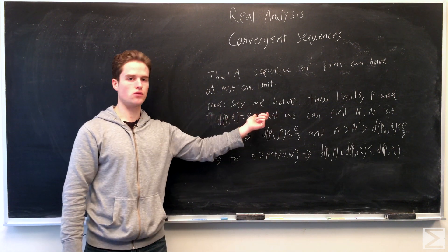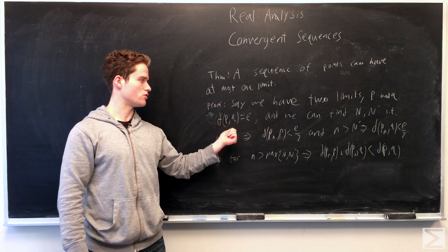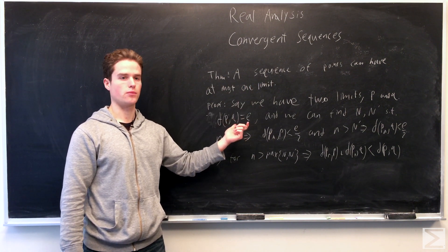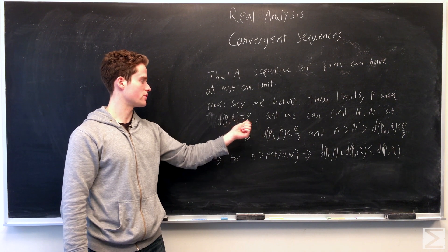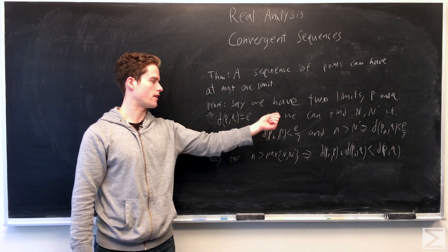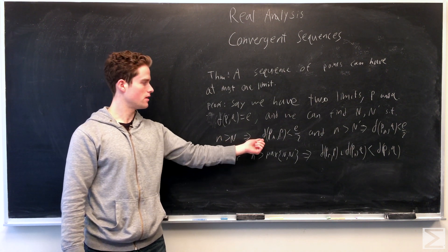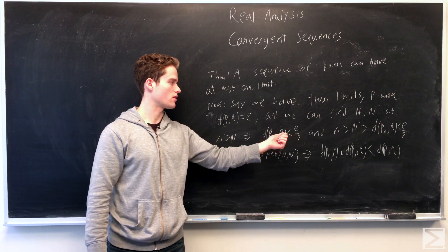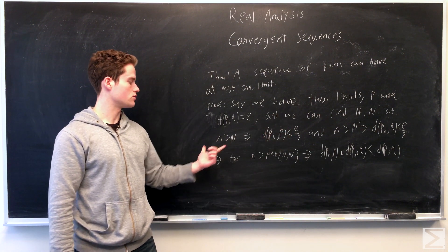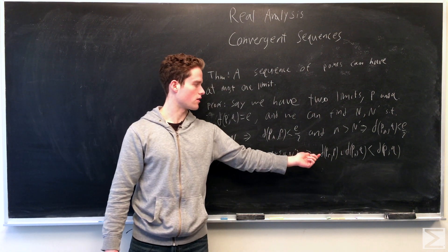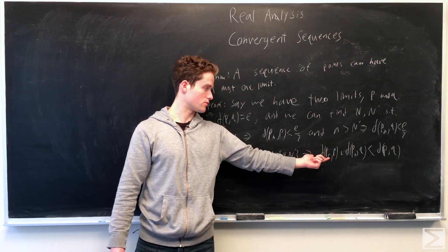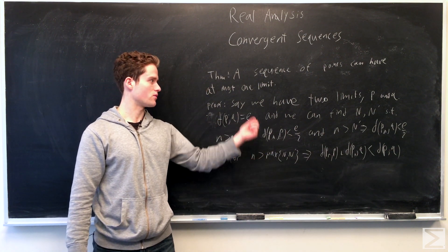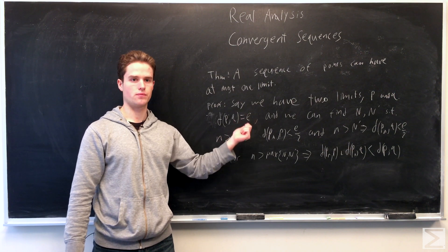To prove it, assume we do have two limits, and say the distance between these two points is some ε. Because we're assuming our sequence converges to two different limits, we can find N and N' such that little n greater than N implies the distance to one limit is less than ε over 2, and same with little n greater than N'. Using these two, we can derive a contradiction to the triangle inequality, which is valid for any metric space by one of its axioms. Therefore, by this contradiction, we can't have two limits, and so we have at most one limit.